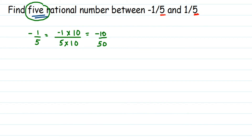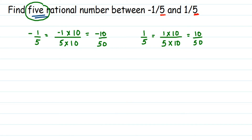The denominator should remain the same, so when finding the equivalent rational number for 1/5, I want the denominator to be 50 again. Multiplying 5 by 10 gives 50, so multiplying 10 in the numerator and denominator gives us 10/50.